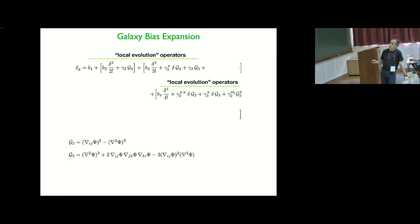So you have things that we call local operators, which are the ones we had before, but now we have also, in addition, these so-called Galilean objects here, G2, G3, which are the only rotational invariant objects you can write in three dimensions, which are local in second derivatives of the potential phi.